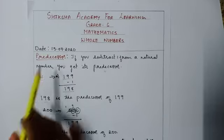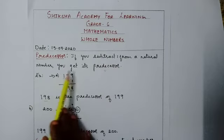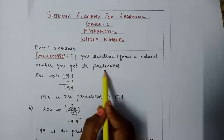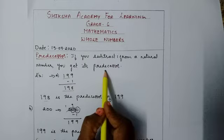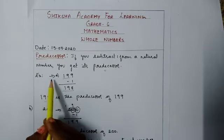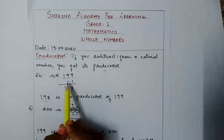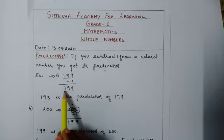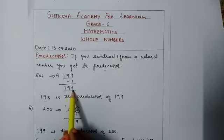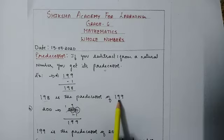The very first concept is predecessor. If you subtract 1 from a natural number you will get its predecessor. Predecessor is nothing but the before number. To find the before number of a given number, we subtract 1. Let us consider the example 199. To find the predecessor of this number we subtract 1, so we will get 198. So 198 is the predecessor of 199.